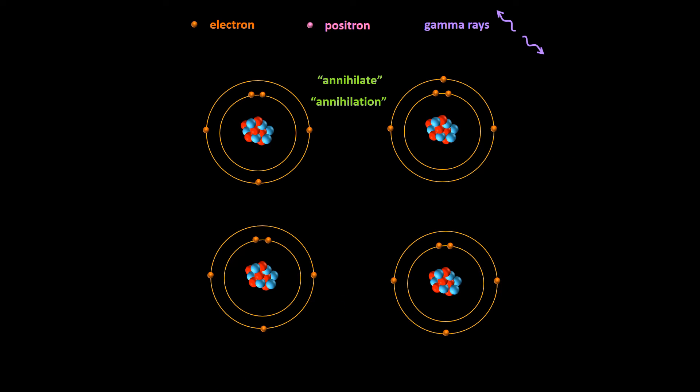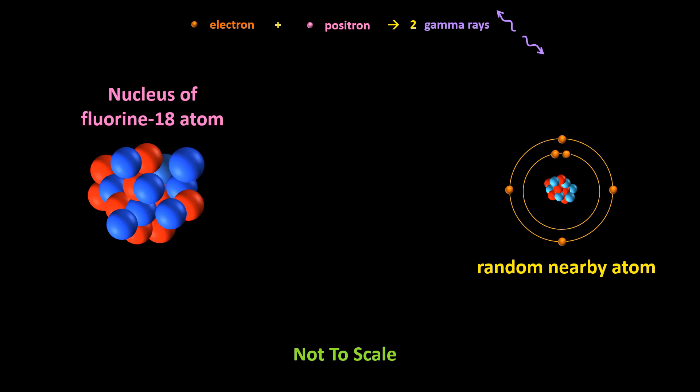Basically, in equation form, an electron plus a positron produces two gamma rays. The world down there at the atomic level is so weird. Positively charged electrons, that is positrons,